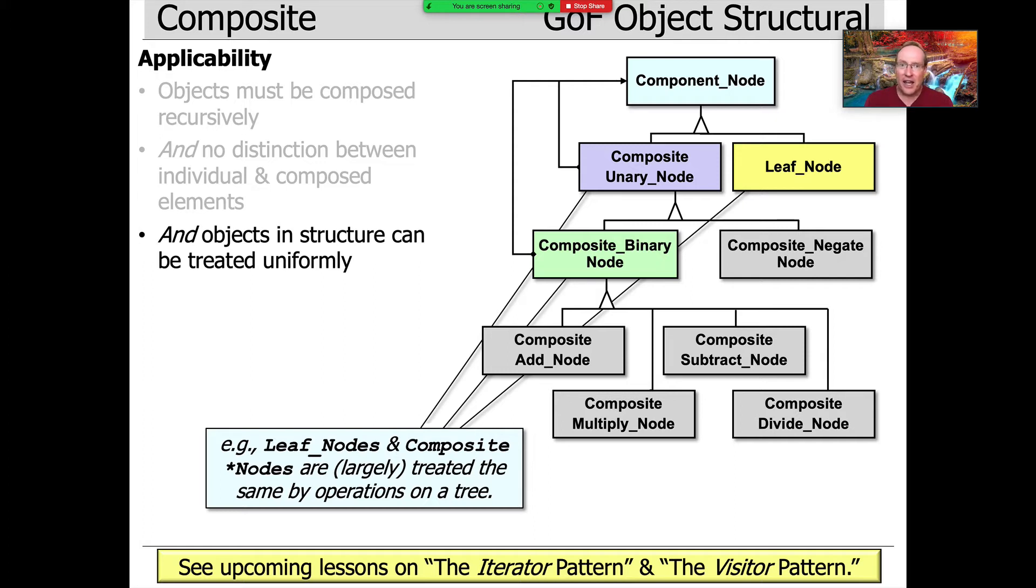You'll see that what this enables us to do is we can iterate through all the nodes in an expression tree and apply some operation to them independently of what the node actually does. That decision about what the node is is deferred to other parts of the software design, which makes it much more extensible and much more pleasant to work with.